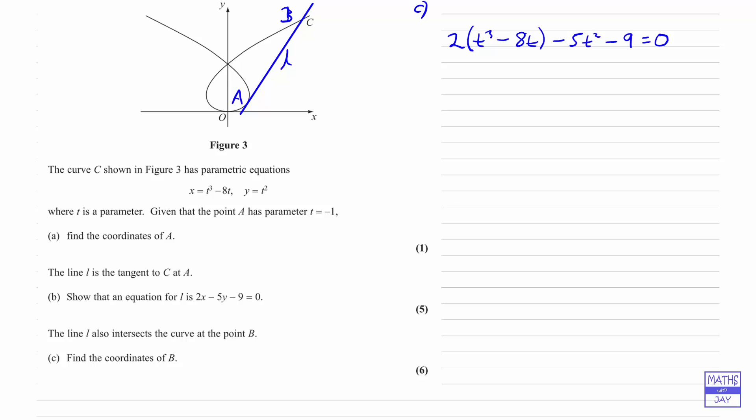So what we'll do first of all is just simplify this so it's a cubic that's easy to deal with. We've got 2T cubed minus 16T minus 5T squared minus 9 equals 0, and that will be a lot easier to work with if we write it in descending powers of T. So we'll leave the 2T cubed where it is, but we'll move the 5T squared there and put the 16T there, and then we've got minus 9 equals 0.